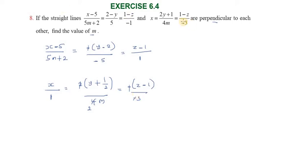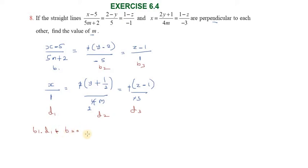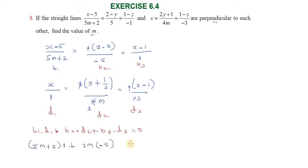The second line gives z minus 1 by 3. Since the two lines are perpendicular, we apply the perpendicularity condition: b1·d1 plus b2·d2 plus b3·d3 equals zero. So we have 5m plus 2 into 1, plus 2m into minus 5, plus 1 into 3.